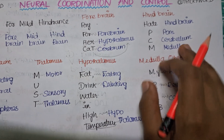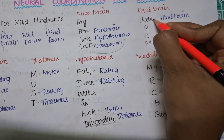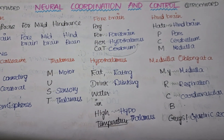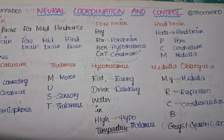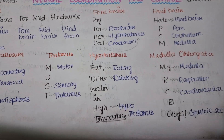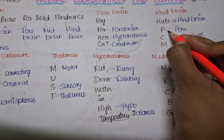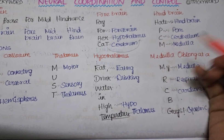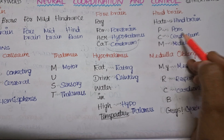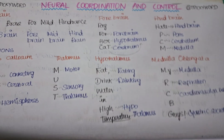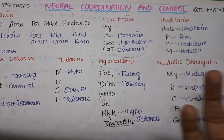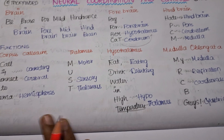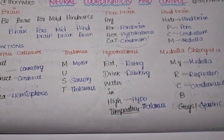For the parts of the hindbrain, the trick is 'Hate PCM' — since biology students often dislike physics, chemistry, and maths. Hate/H is for hindbrain, P is for pons, C is for cerebellum, M is for medulla. So to remember the parts of the hindbrain, just remember the subjects you hate — PCM!